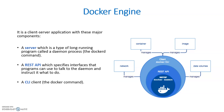The Docker engine is the main driving feature. It's a client-server application with three components: a server, a REST API, and a CLI. The server is a long-running program called a daemon process. The REST API specifies interfaces that programs can use to communicate with the daemon and instruct it what to do. The CLI is what we communicate with — Docker CLI commands talk to the REST API, which communicates with the core Docker daemon to perform assigned activities.